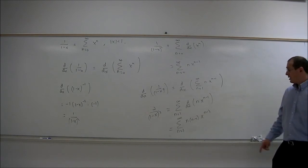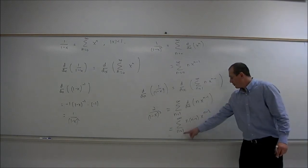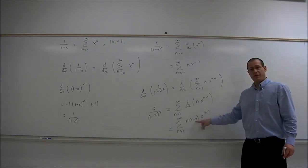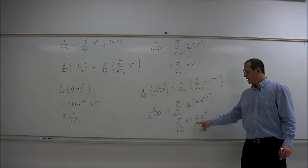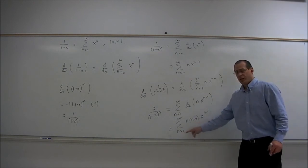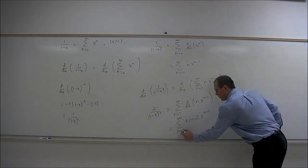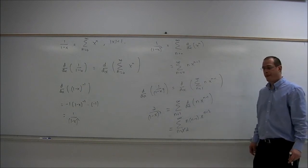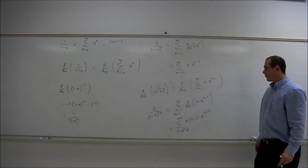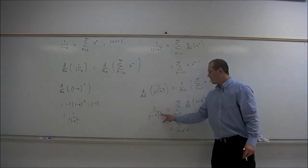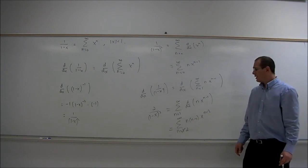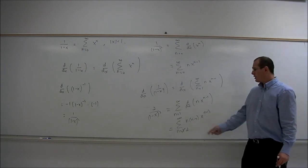When n is equal to 1, we get a factor of 0, so this power series could be started at n equals 2 instead. So there's a power series for 2 over 1 minus x quantity cubed via differentiation.